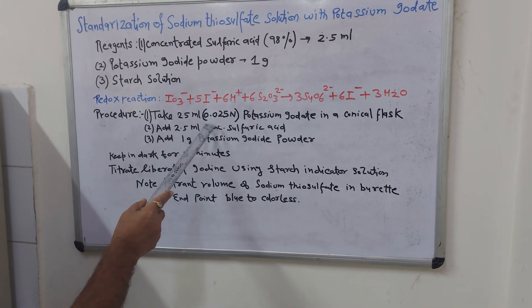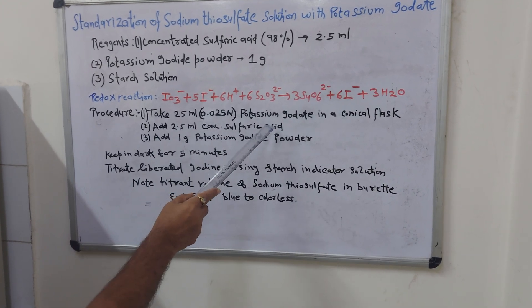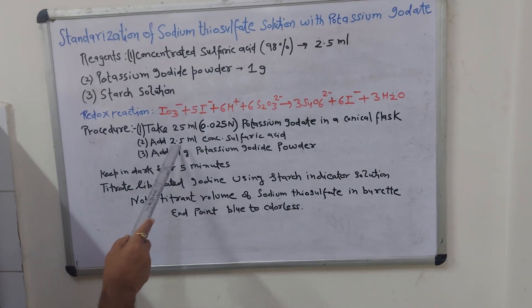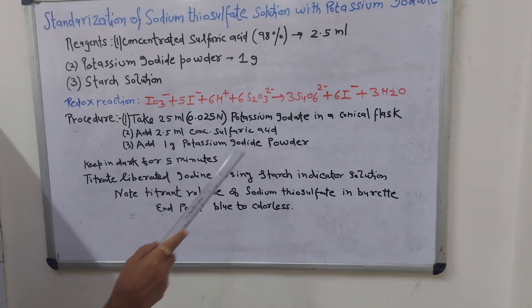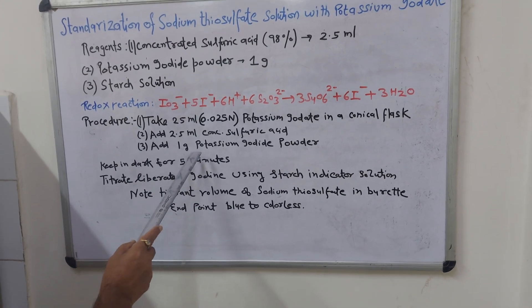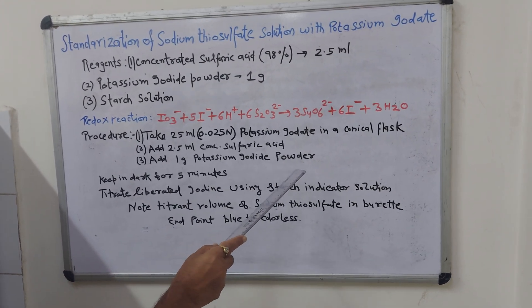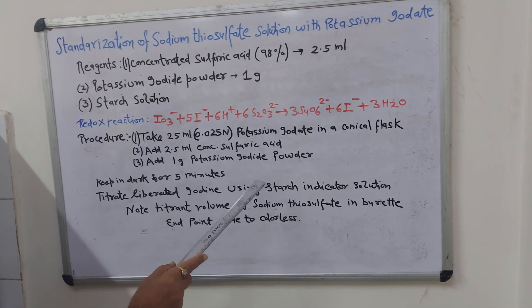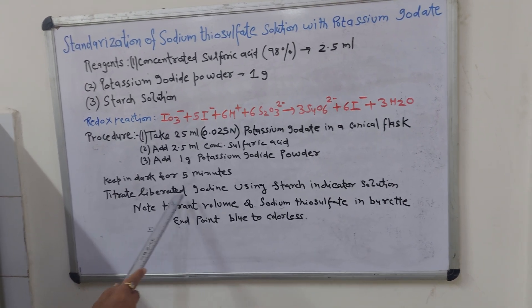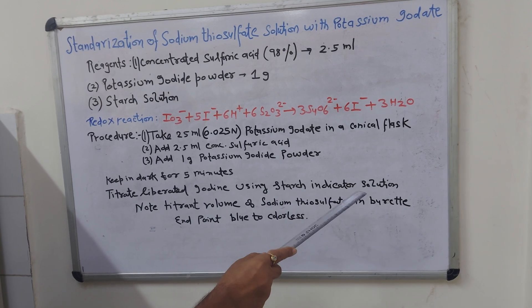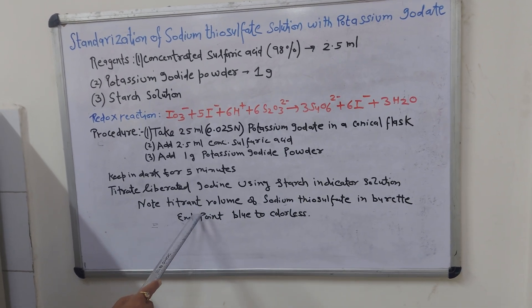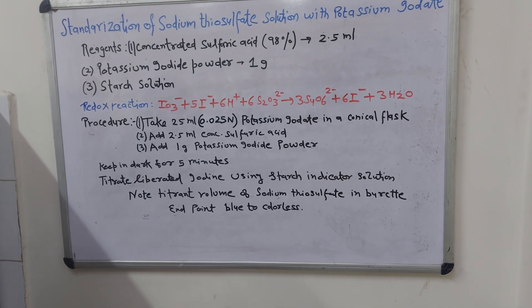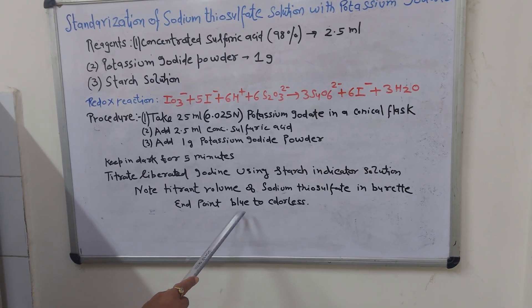Procedure: Take 25 ml of 0.025 normal potassium iodate in a conical flask. Add 2.5 ml concentrated sulfuric acid and 1 gram of potassium iodate powder to liberate iodine. Keep it in the dark for 5 minutes. Titrate the liberated iodine using starch indicator. The end point changes from blue to colorless.